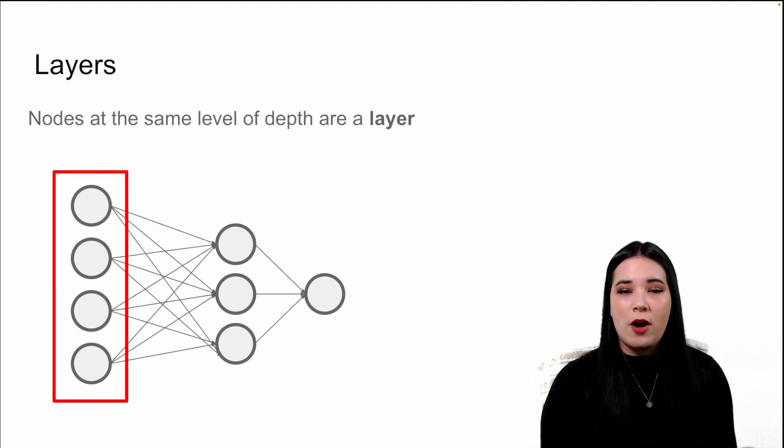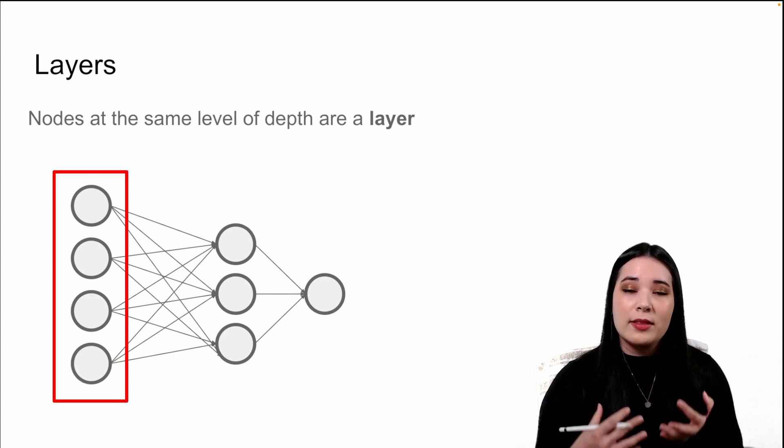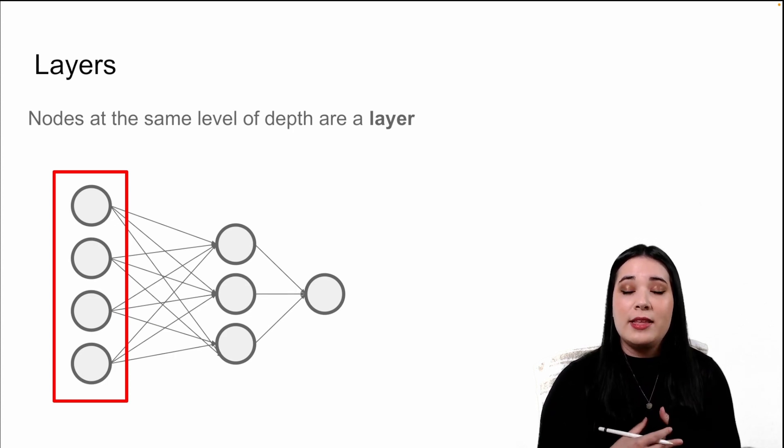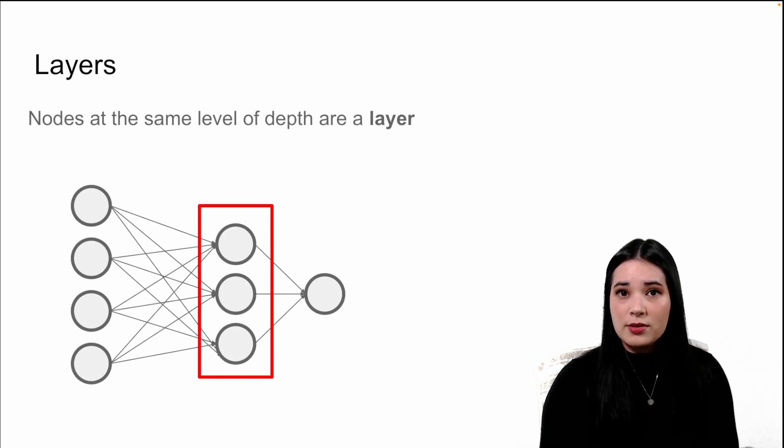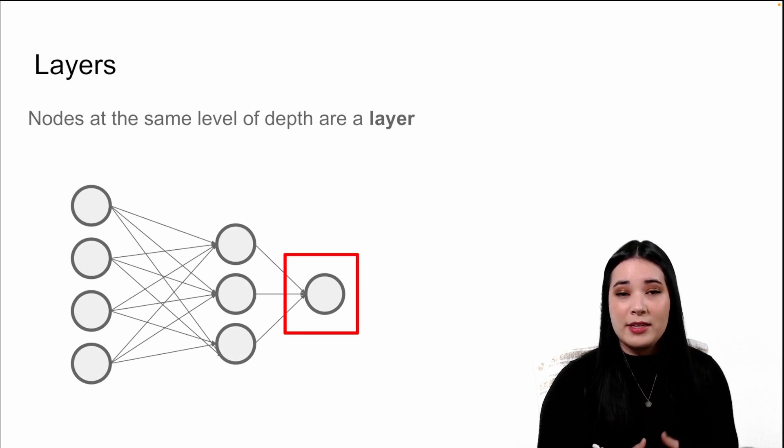So our diagrams of neural network structure often look more like this than the previous example. The next term we need to be familiar with are layers. Layers are groups of nodes at the same level of depth. For instance, in the red, you can see that these nodes make up a layer in our neural network. So do these nodes and this node. That means that this neural network has three layers.